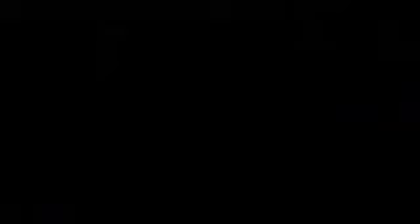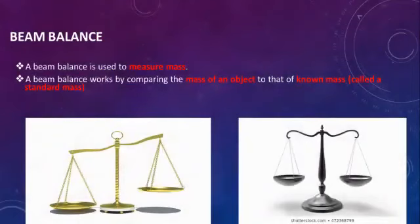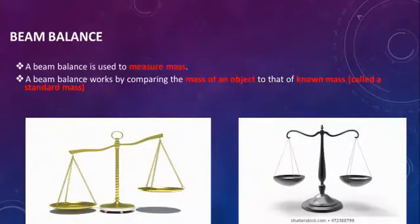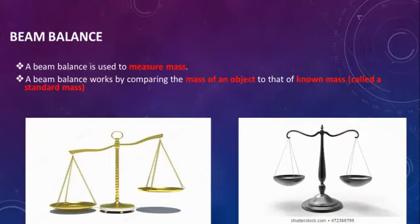Next, we look at the beam balance. A beam balance is a device used for the determination of the mass of a body under gravitation — it compares the mass of an object with a known mass. You would have already seen this in many grocery shops where they weigh provisions using a beam balance.